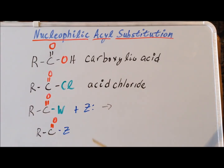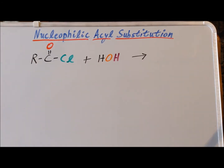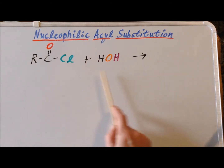If we want or need to recover the original carboxylic acid from the acid chloride, this can be easily achieved by reaction with water, H2O, in a reaction called the hydrolysis of an acid chloride.